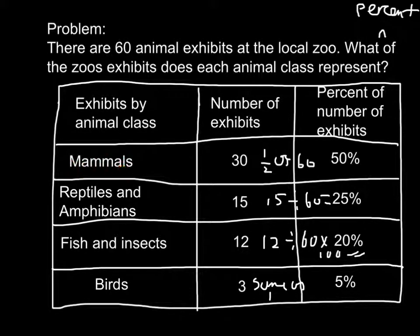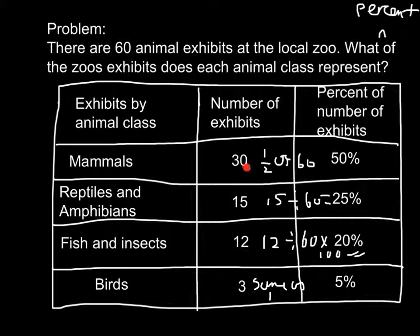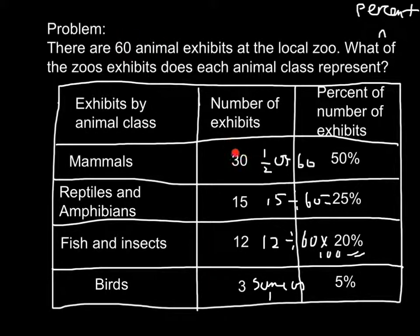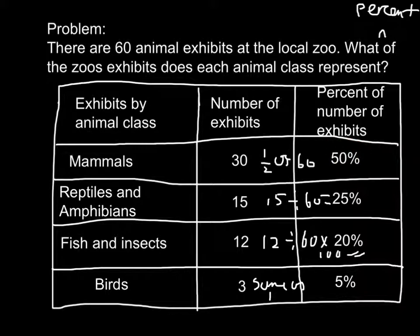For the mammals, there are 30 mammals. I am trying to find out the percentage of 30 out of 60. We know half of 60 is 30, so it's going to be 50% because it's half of 60.